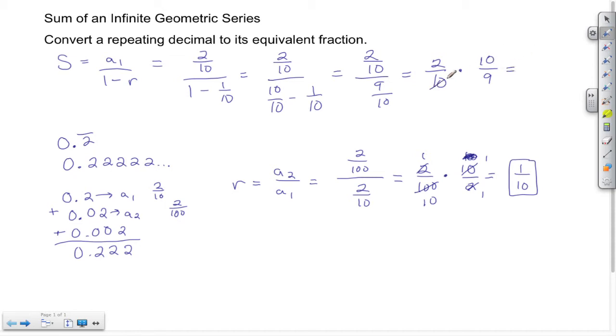Before I multiply, I can cross cancel. 10 divided by 10 is 1. And now I have 2 times 1 to give me 2, and 1 times 9 to give me 9. So here I'm showing that 2/9 is the same thing as 0.2̄ repeating.